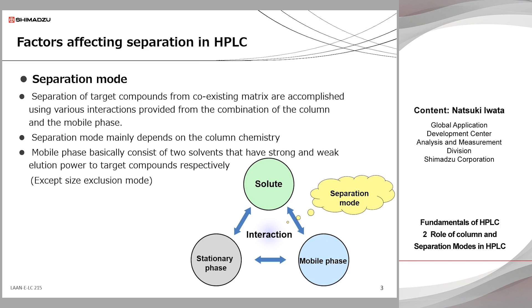Let's take a closer look at why the difference in moving speed occurs. Here shows the three key factors in the column: solute, mobile phase, and stationary phase. The solute are compounds contained in the sample. The mobile phase is liquid flowing constantly through the column. The stationary phase is chemical groups that are chemically bonded on the surface of spherical particles, which is called packing material.